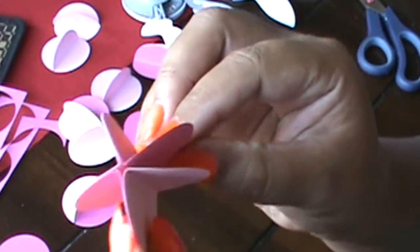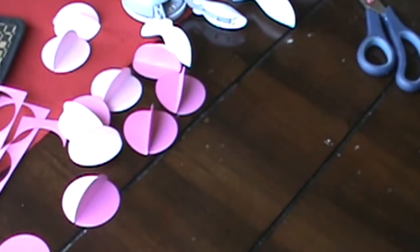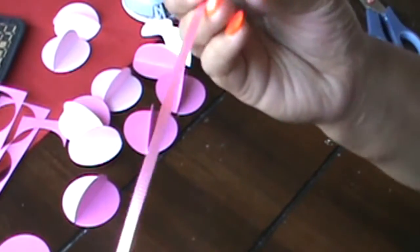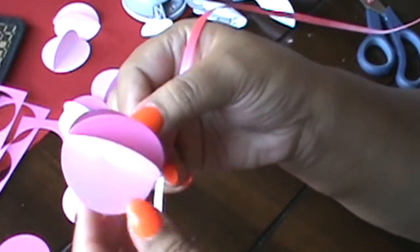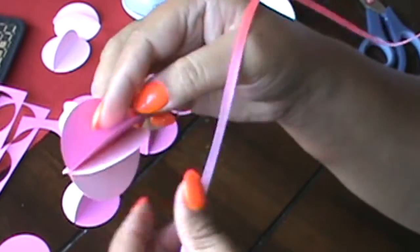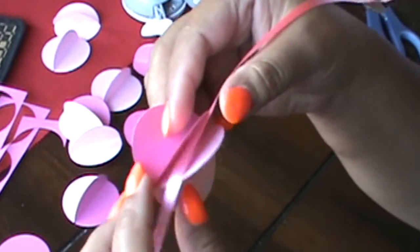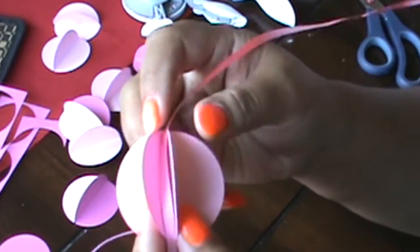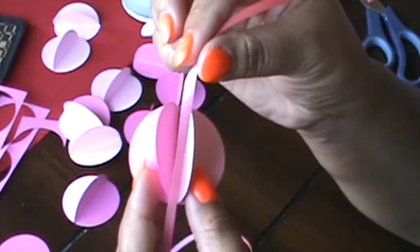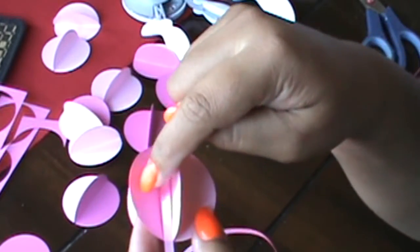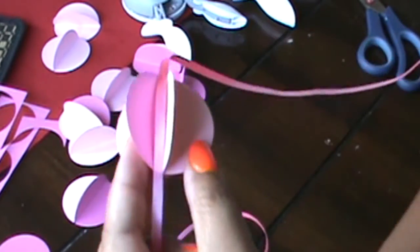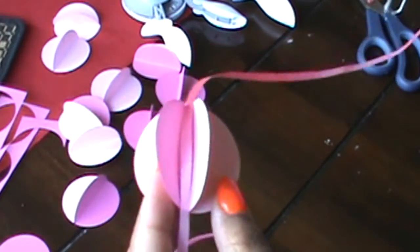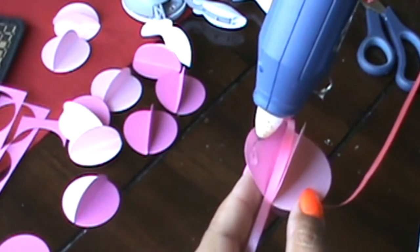You're gonna grab your ribbon or string, whatever you're going to use to hang your garland. You're gonna slide it in between those two tacos right there, the only opening you have right now. Okay, so then you are going to grab your glue gun, and you're gonna glue just that one half, one side again.